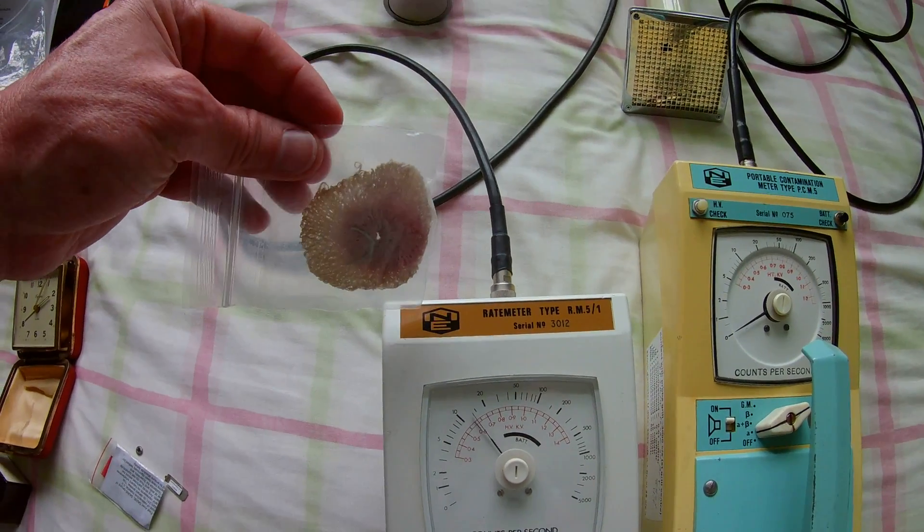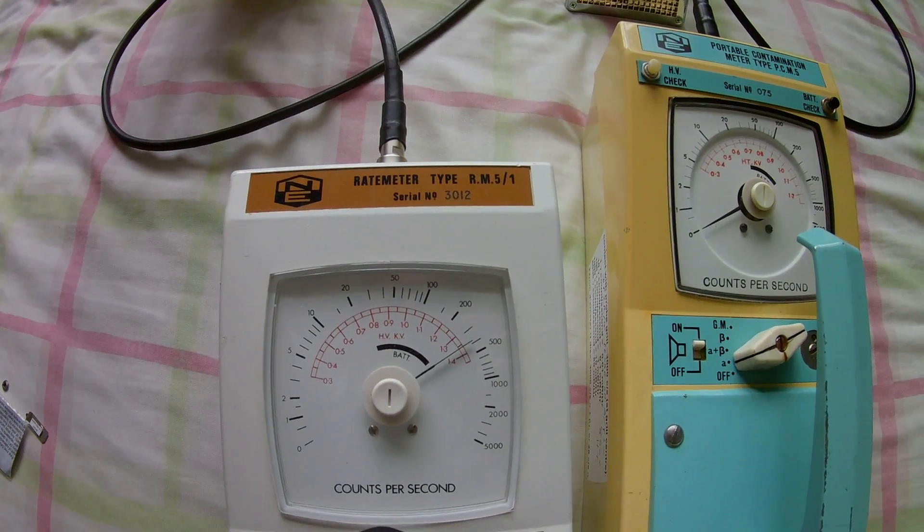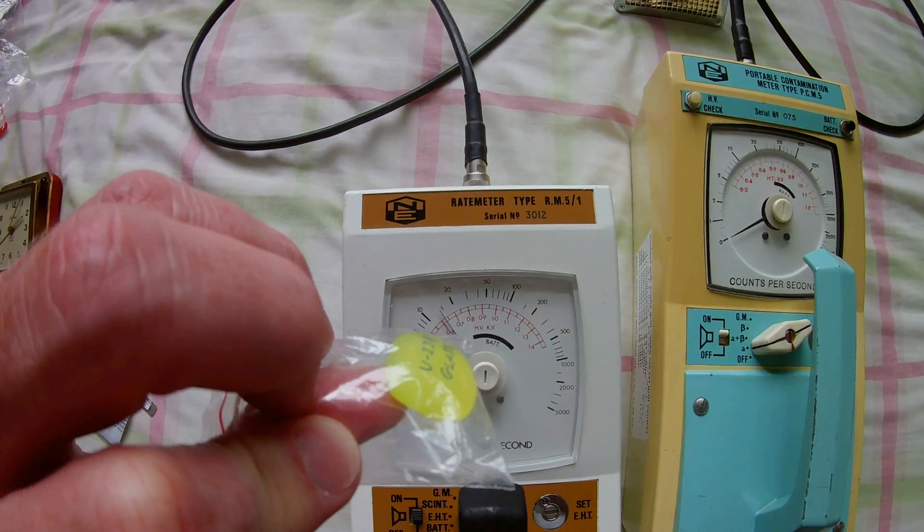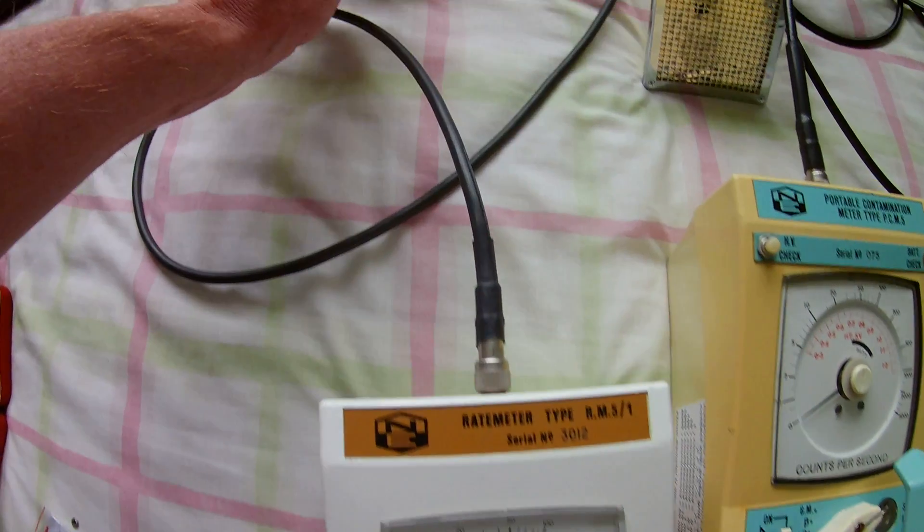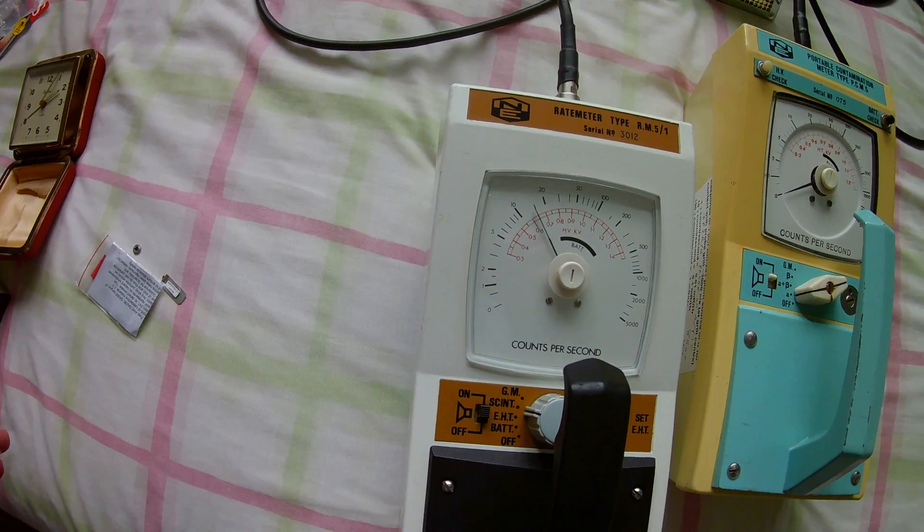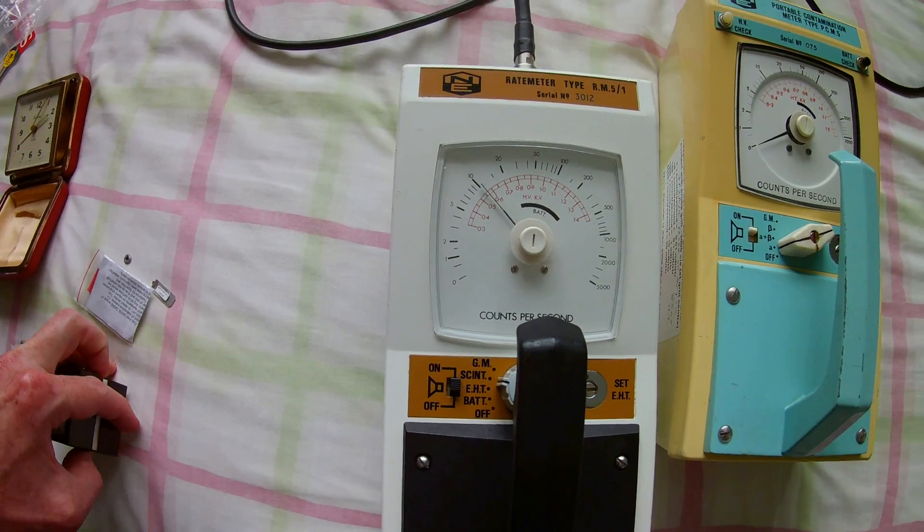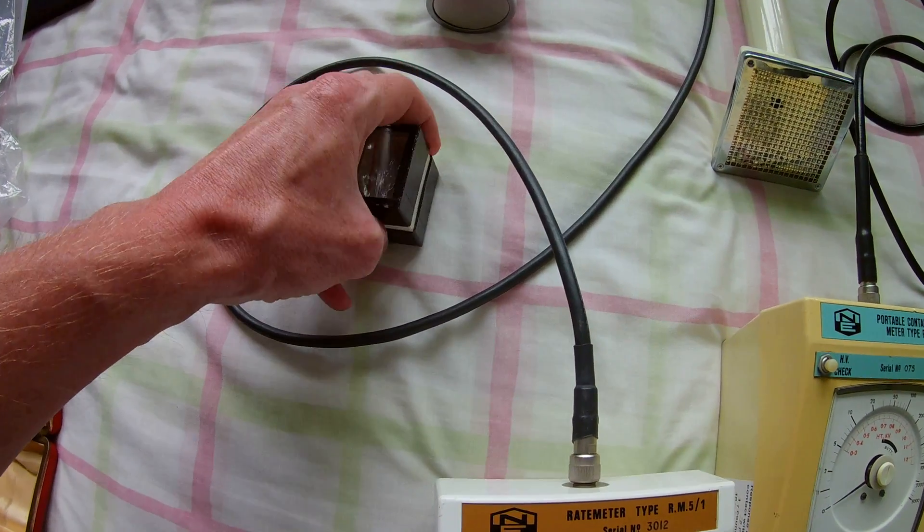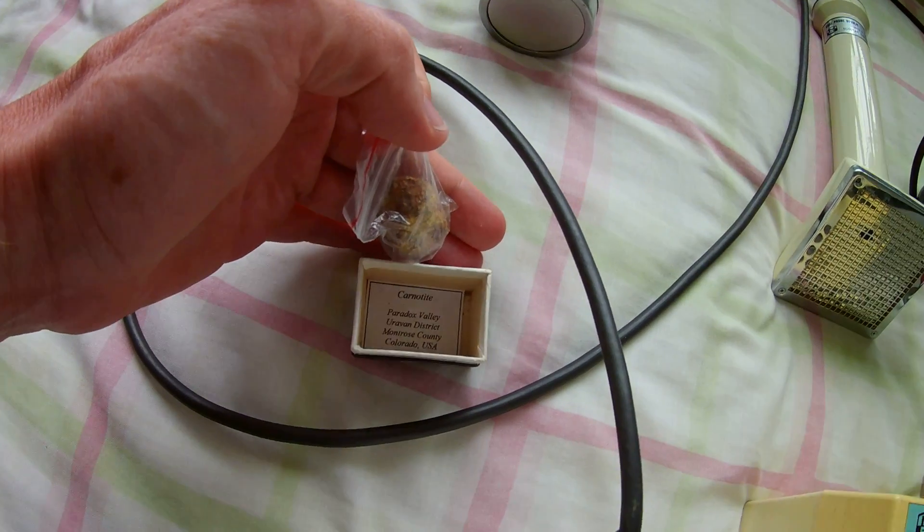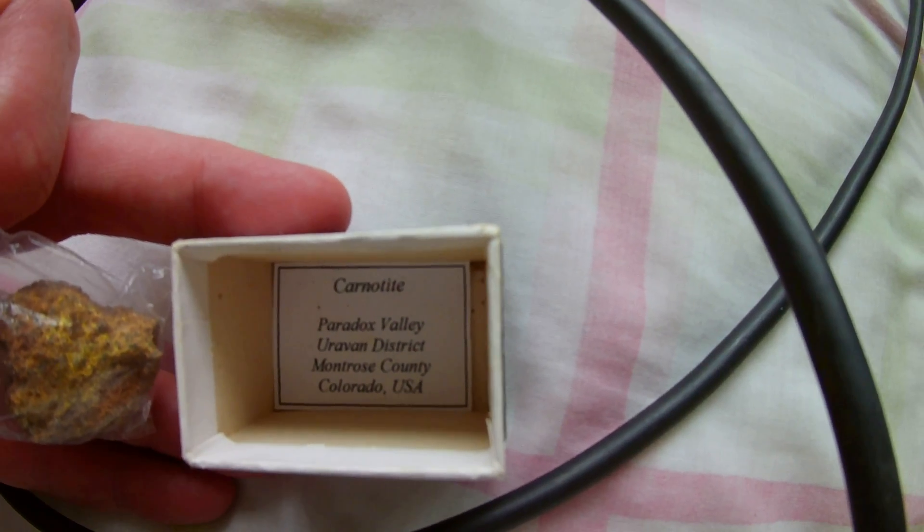A thorium mantle. In contact that gives about 300 counts per second. Uranium glass, about 30 counts per second. And a uranium sample from the United States of America, carnotite from Paradox Valley, Montrose County, Colorado.